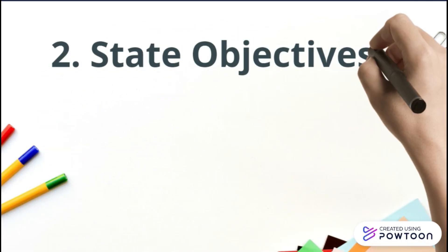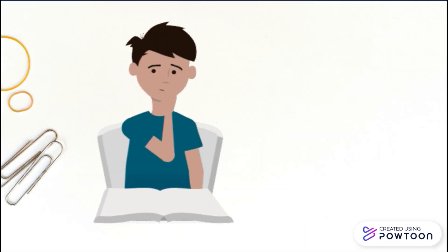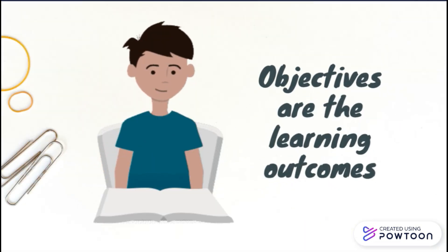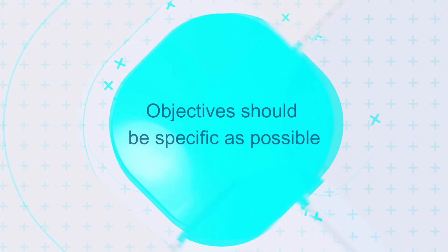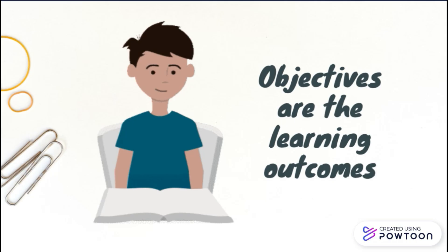The second step is to State Objectives. The stated objectives are statements describing what the learner will do as a result of instruction — in other words, objectives are the learning outcomes, that is, what the students will learn from the lesson. In order to develop proper objectives, you must frame them in terms of desired behavior — what the learner will be able to accomplish after completing the instruction. The objectives you use should be as specific as possible so the learner understands what they are to accomplish. If objectives are clearly and specifically stated, both the learning and teaching will become objective-oriented.